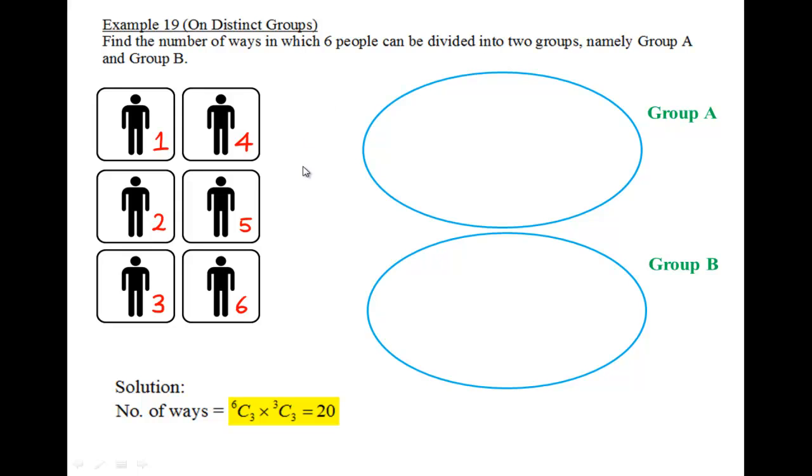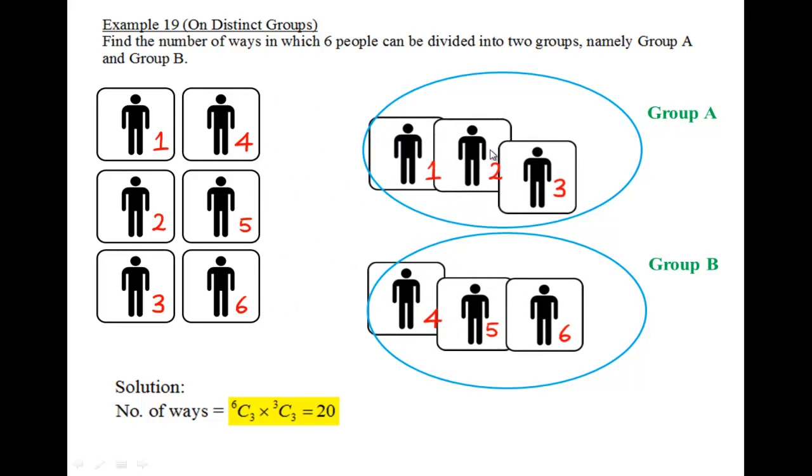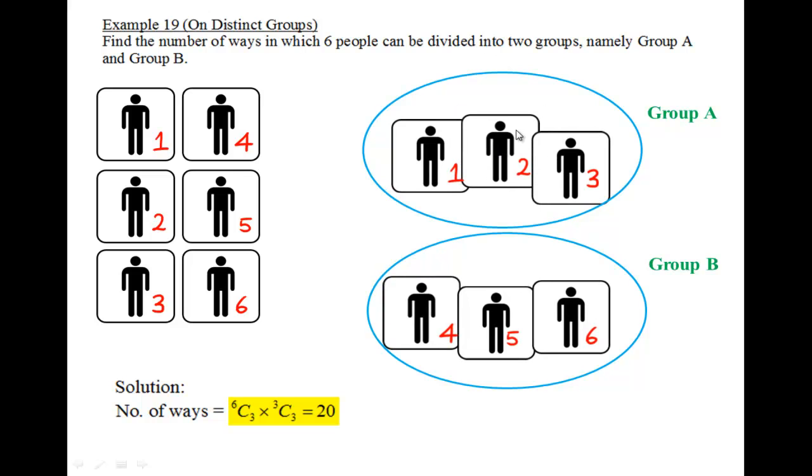So the same as Example 18, among the six of them, I can randomly choose any three of them to form Group A. So in this case, I will pick 1, 2, and 3 to be in Group A, and this will result in 4, 5, 6 being in Group B.